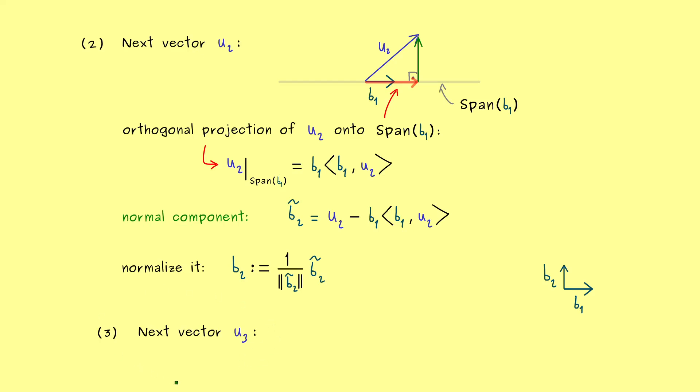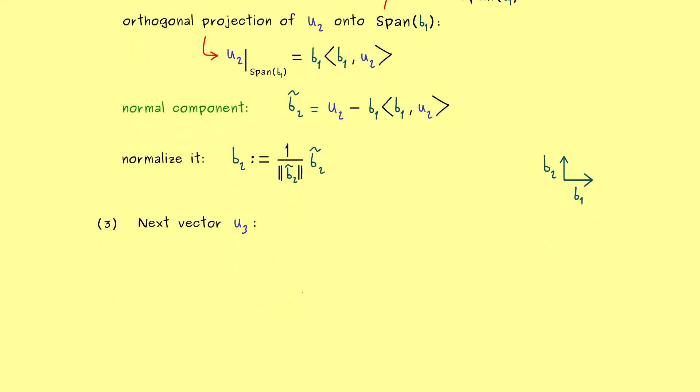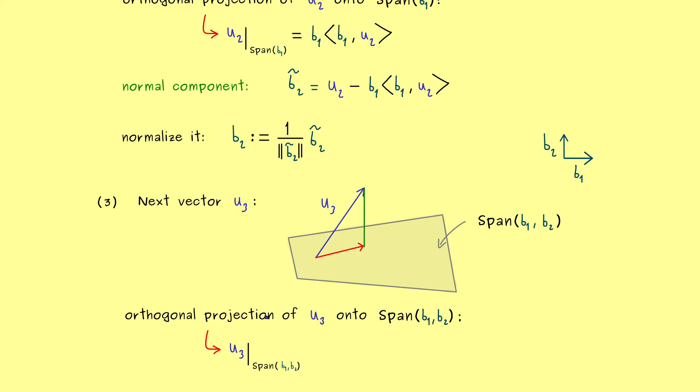So in the third step we just have to consider u₃ now. And there we can use that b₁ and b₂ already span a two-dimensional subspace. So in some sense it's similar to before. Here we just have the span of two vectors, and we know that u₃ does not lie in this plane because originally we had a basis. And there you see, similarly to before, we can just calculate the orthogonal projection again, and then again we will just take the normal component.